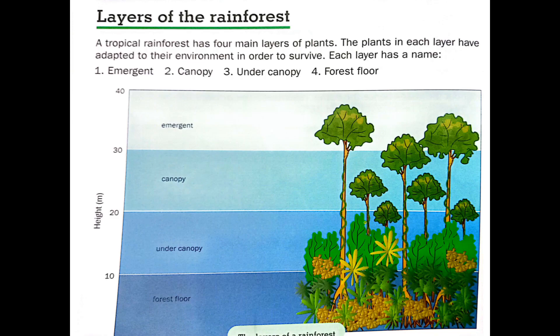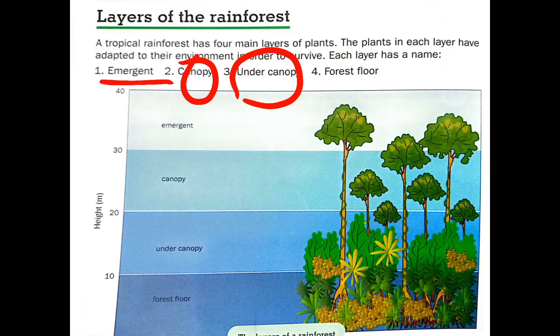The plants in each layer have adapted to their environment in order to survive. Each layer has a name: the first layer is the emergent, the second is the canopy, the third is the under canopy, and the last one is the forest floor.